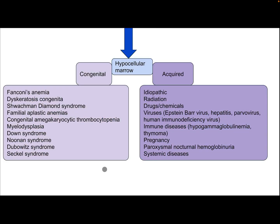If hypocellular marrow is found, the cause may be congenital — such as Fanconi anemia, dyskeratosis congenita, Schwachmann-Diamond syndrome, familial aplastic anemia, congenital amegakaryocytic thrombocytopenia, myelodysplasia, Down syndrome, Noonan syndrome, or other syndromes — or acquired, including radiation, drugs, chemicals, viruses such as Epstein-Barr virus, hepatitis, parvovirus, HIV, immune disease, hypogammaglobulinemia, thymoma, pregnancy, paroxysmal nocturnal hemoglobinuria, or systemic disease.